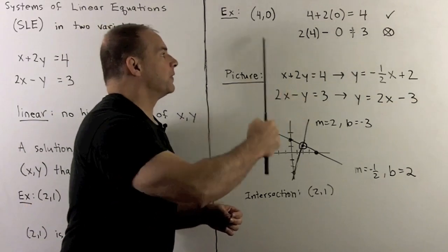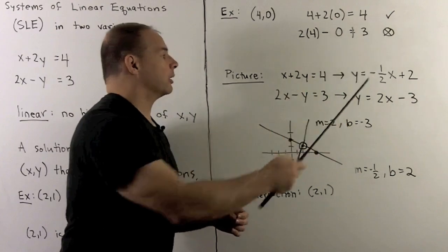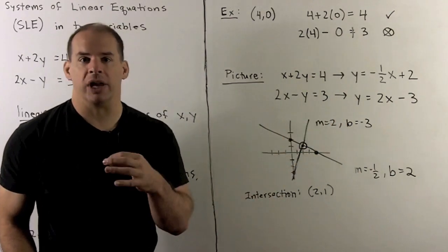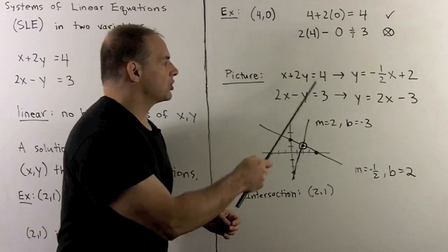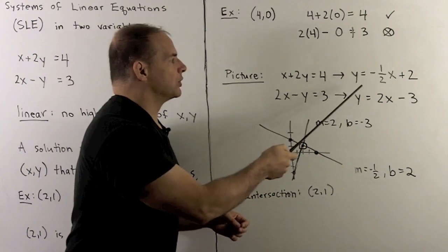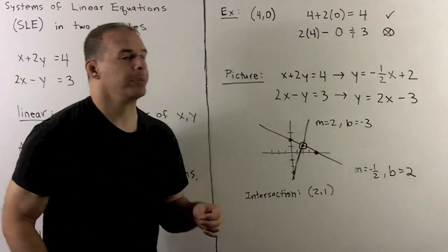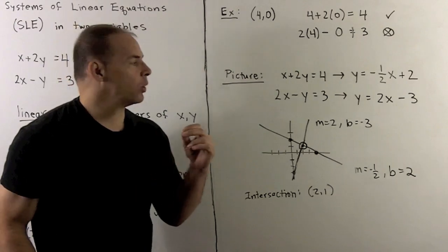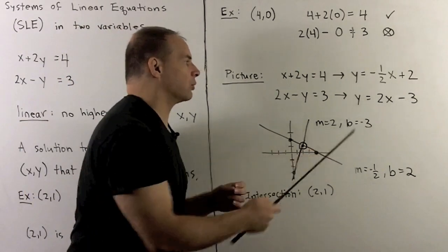Now let's put things together by looking at the picture. If we take our equations and put them in slope-intercept form: the first equation becomes y equals negative one-half x plus 2, and the second equation becomes y equals 2x minus 3.